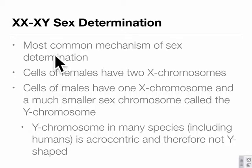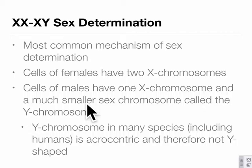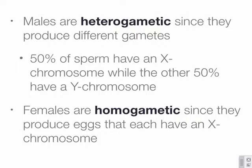The XX/XY system is the most common and the one you're most familiar with — females have two X chromosomes, males have one X and a smaller Y chromosome. The Y chromosome appears evolutionarily to be derived from the X but has lost nearly all of the X's sequences. To introduce some terminology: males are heterogametic, meaning they produce different gametes — sperm with either an X or a Y. Females are homogametic — all eggs have the same composition, an X chromosome.